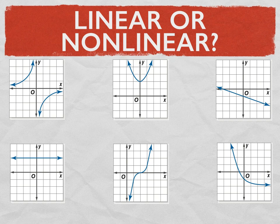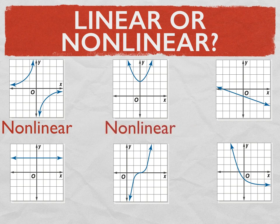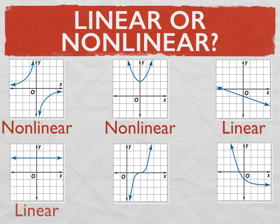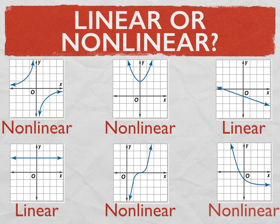A nonlinear line is going to have some sort of curve to it. So the first graph would be nonlinear, the second graph would be nonlinear, the third graph would be linear, fourth graph would also be linear, and then the last two graphs would be nonlinear. Hopefully you kind of see the difference between linear and nonlinear.